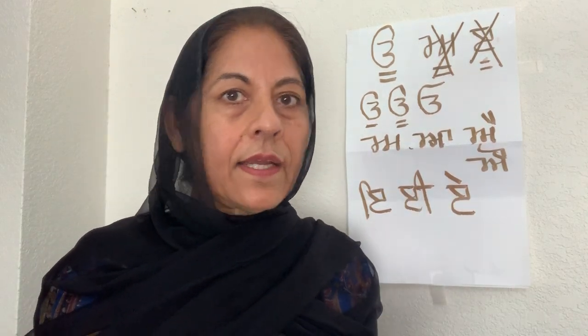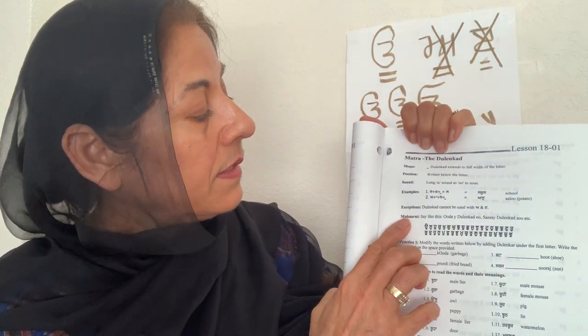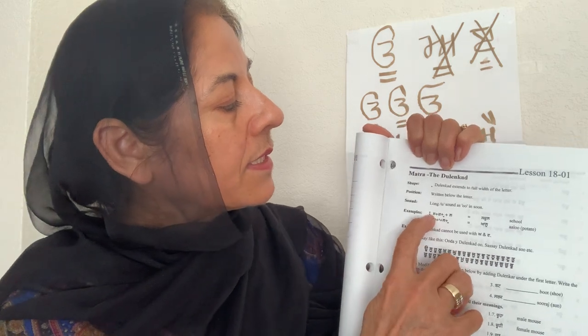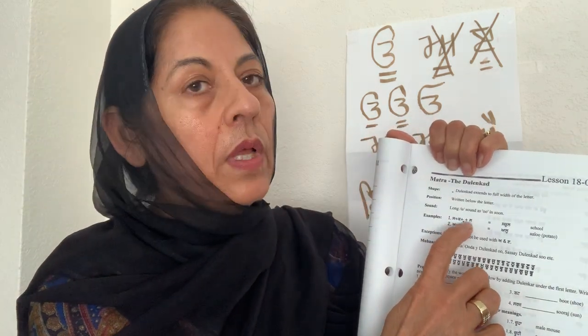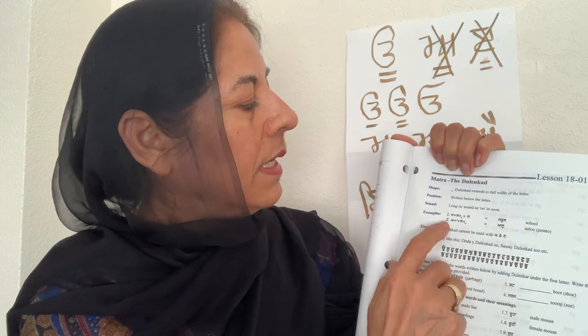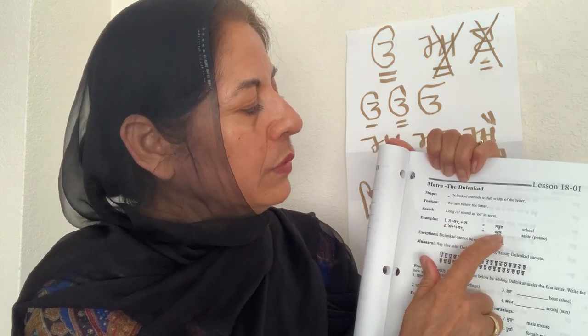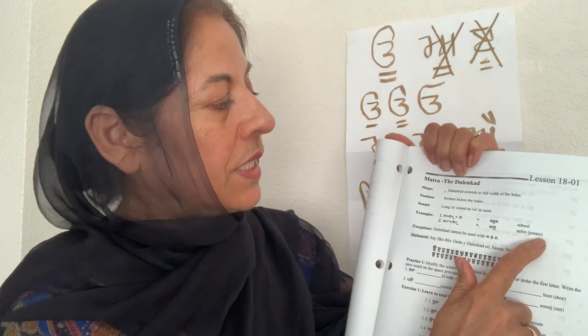However, all other letters of the Pentiyakri can take every Matra, so you just have to remember this one exception. Here are some examples with the Matra — the Lankar. This one is S-K-U-L: School. A-L-U: Alu — alu is a potato.